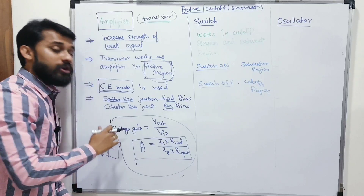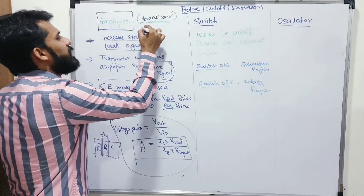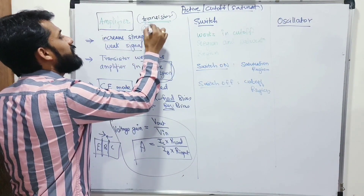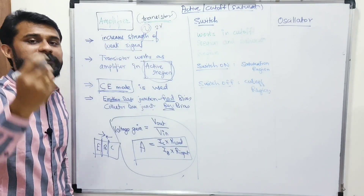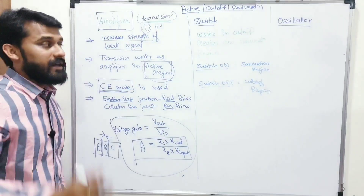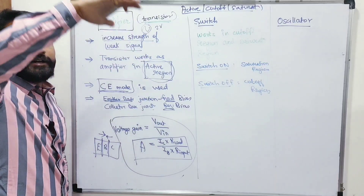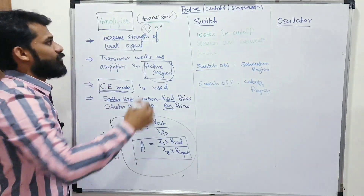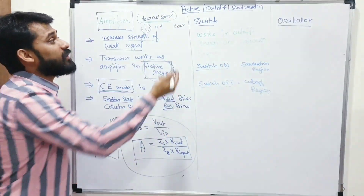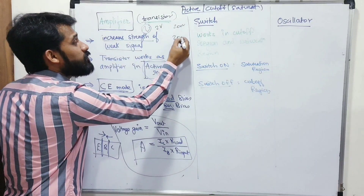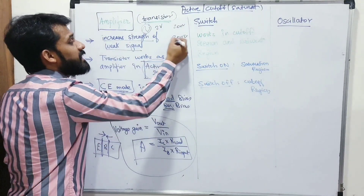The most important formula is for voltage gain. Gain means how many times the voltage is amplified — for example, an input of 2V amplified 100 times gives an output of 200V. Gain is defined as output voltage divided by input voltage.